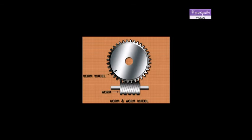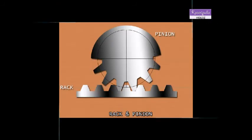Rack and Pinion. Rack is a straight bar with teeth cut perpendicular to the axis. Rack can be considered as a gear wheel with infinite radius. The pair is used to convert rotary motion to rectilinear motion. Mechanisms for moving the carriage in a lathe, spindle in a drilling machine, and bed in a planning machine are examples of the rack and pinion drive.